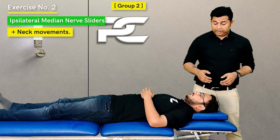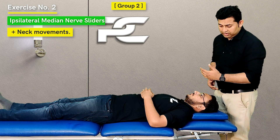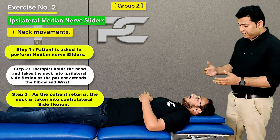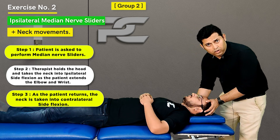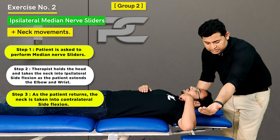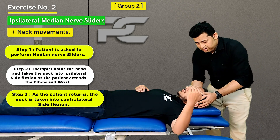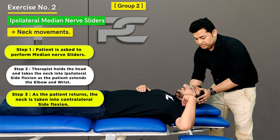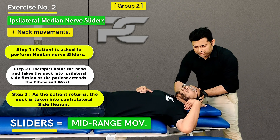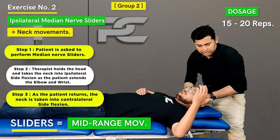For the second exercise to create two-ended sliding of the neural content, the therapist stands at the head end of the treatment table and slides the neural content distally and proximally in relation to the cervical spine and upper limb. The therapist safely holds the patient's head, and the patient is asked to perform the median nerve distal and proximal sliders. Once the patient starts extending the elbow, the therapist takes the head and neck into ipsilateral side flexion, and once the patient returns, the therapist takes the head and neck towards contralateral side flexion. Every time, the intention is only to slide the nervous system and not tension it, so movement goes only up to the mid-range of elbow extension.